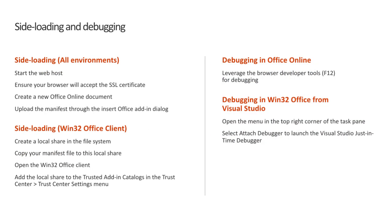For sideloading and debugging Angular add-ins, the approach is the same as with React. Office Online is available to all developer environments — it involves uploading the add-in XML manifest through a new Office document via OneDrive. Debugging can be done with the browser developer tools. For Windows users, you can sideload the add-in by creating a local network share, placing the add-in XML manifest in that share, and configuring the Office client to look for the add-in via the trusted add-in catalog settings in Trust Center. Visual Studio users can even attach a debugger to task pane add-ins running the Win32 Office client.